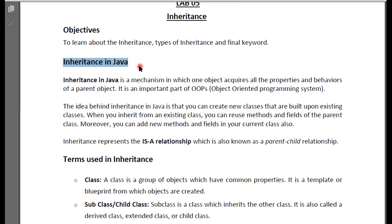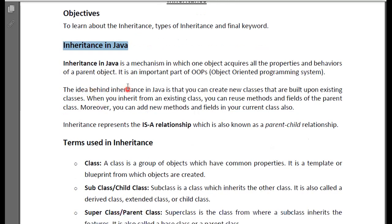Basically, you can use a function of inheritance. Inheritance includes all the properties of the parent class and the behavior of the child class, as well as the functions and attributes of the child class. The idea behind inheritance in Java is that you can create new classes that are built upon existing classes.